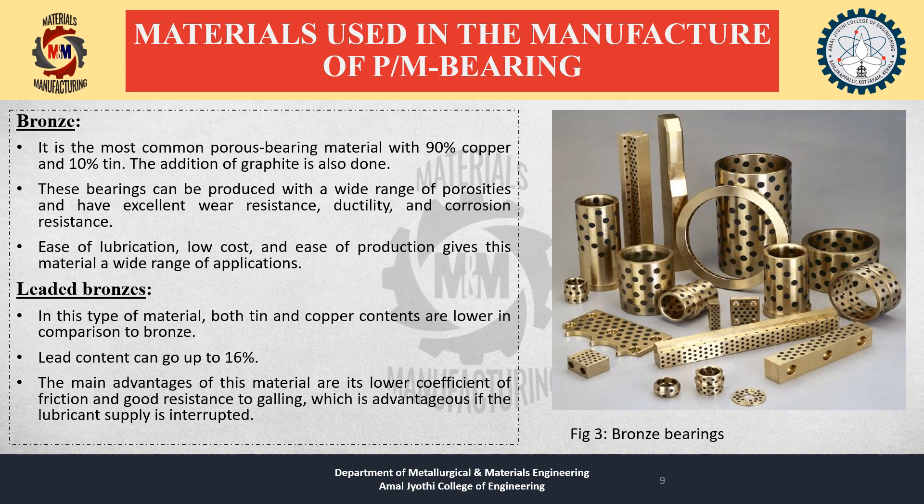Leaded bronze: In this type of material, both tin and copper contents are low in comparison to bronze-based bearings. Lead content can go up to 16%. The main advantages of this material are its low coefficient of friction and good resistance to galling, which is advantageous if the lubricant supply is interrupted. Galling is a form of wear caused by adhesion between sliding surfaces, common where there is inadequate lubrication.